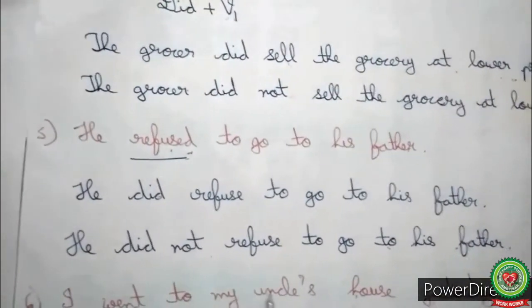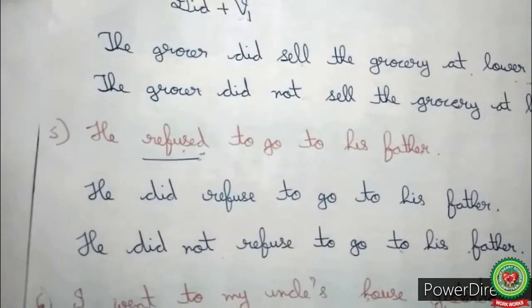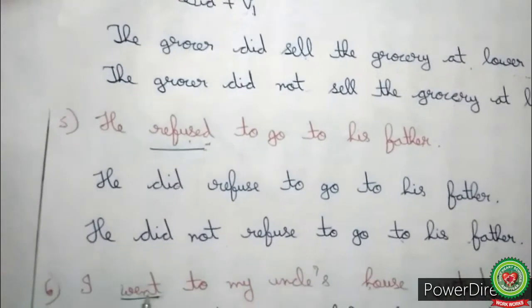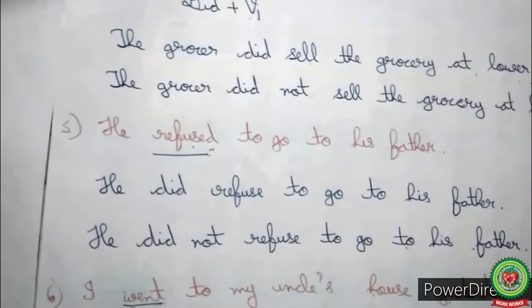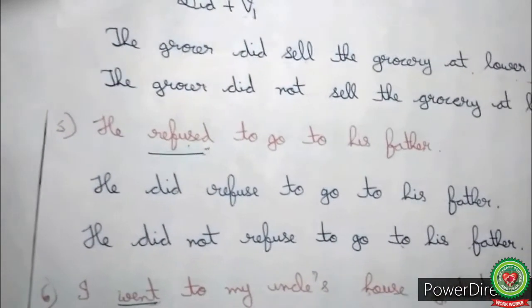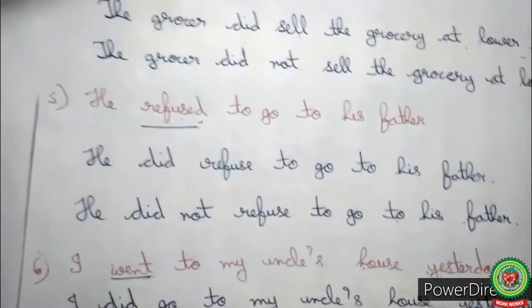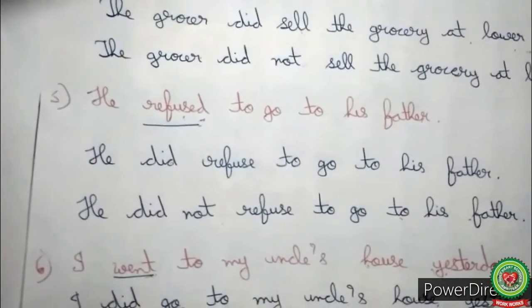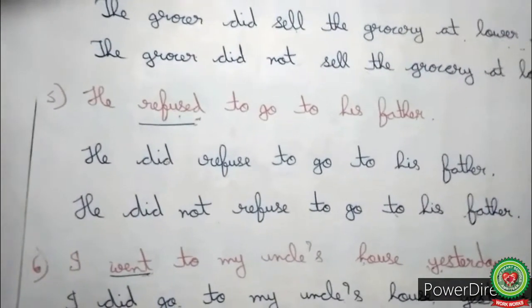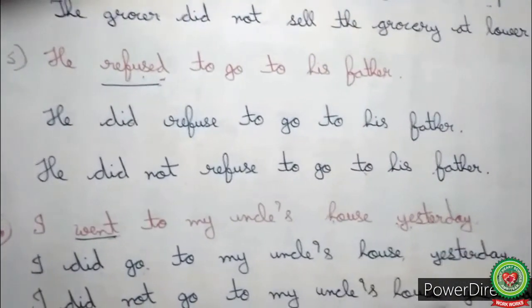See the next example: 'I went to my uncle's house yesterday.' 'Went' is the past form of the verb. We add 'did' as a helping verb, and the sentence becomes: 'I did go to my uncle's house yesterday' — 'went' has been changed to 'did go,' that is, did + present form. Now adding 'not,' the sentence becomes: 'I did not go to my uncle's house yesterday.'